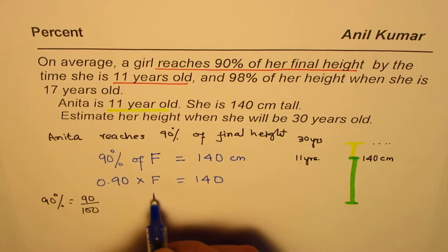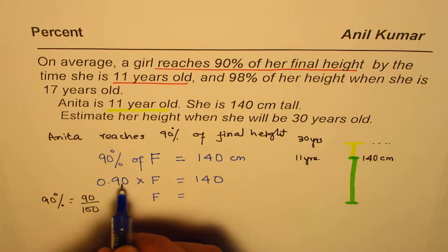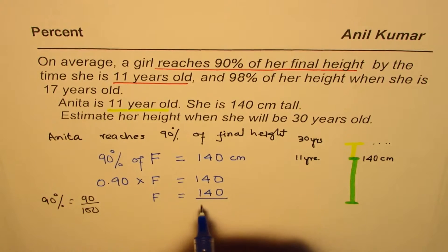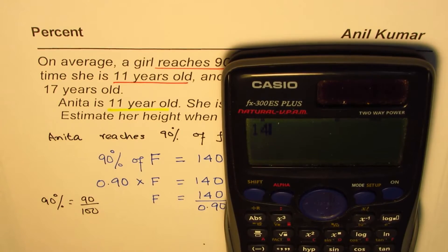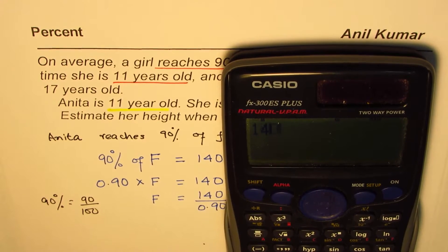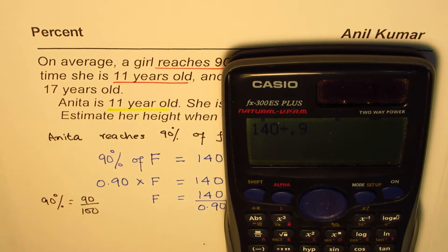So how do we find the final height? To find final height I have to divide both sides by 0.9. So I get 140 divided by 0.9. Should you get a number which is bigger or smaller? We're dividing by 0.9, which is less than 1, so you should get a bigger number.